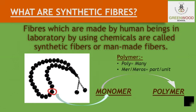Let us introduce what synthetic fibers are. In previous classes you have already learned about natural fibers — fibers occurring naturally, obtained directly from plants or animals, like cotton, jute, and silk. Now, synthetic fibers are fibers which are not natural; they are made by human beings in laboratories using chemicals. They are not occurring naturally — they are being created. So they are called synthetic fibers.